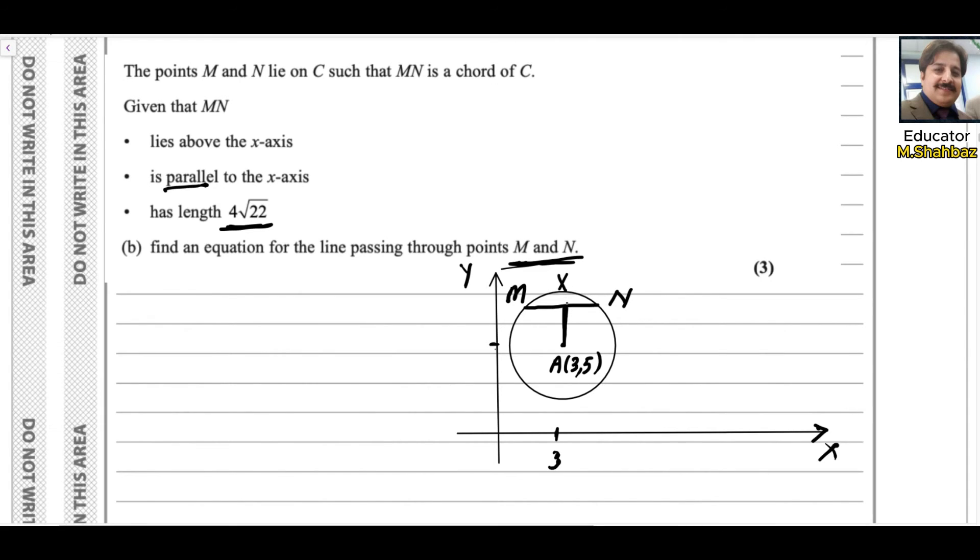So this length will be half of the chord length 4√22. So XN will be 2√22, which is half of the MN length.